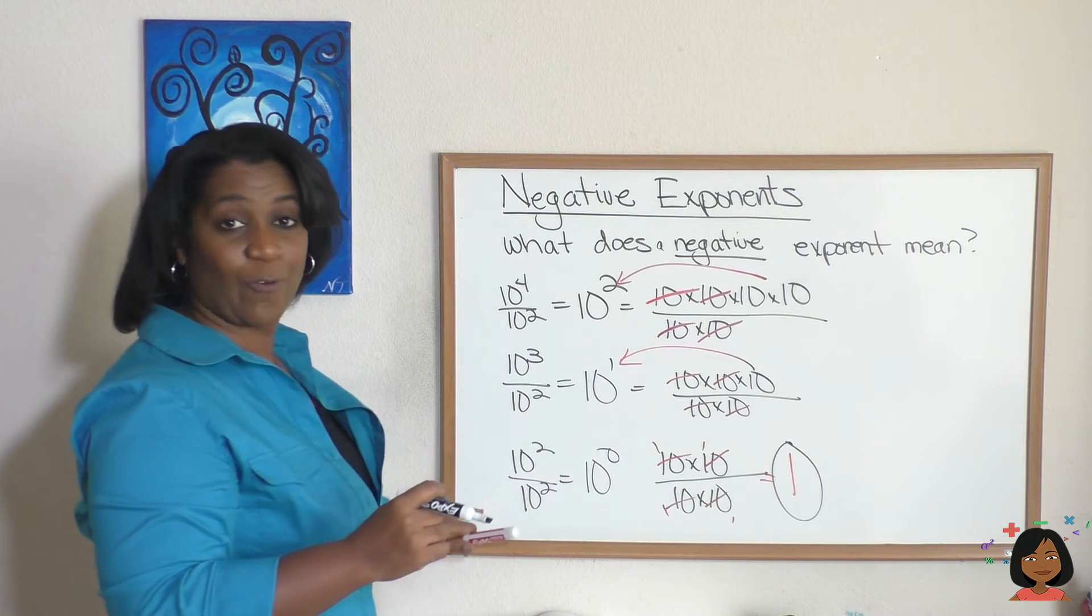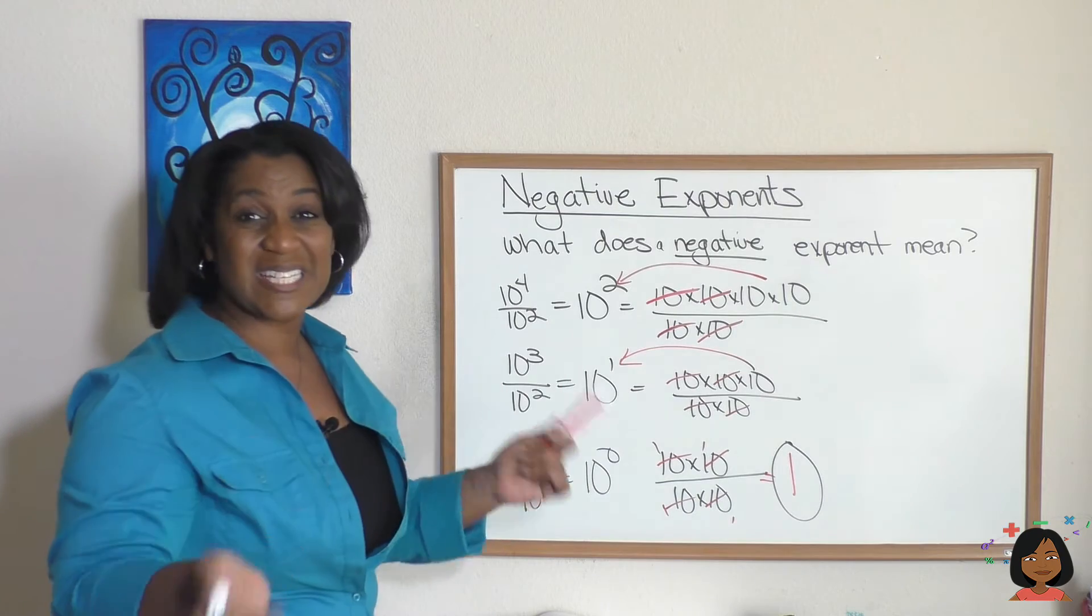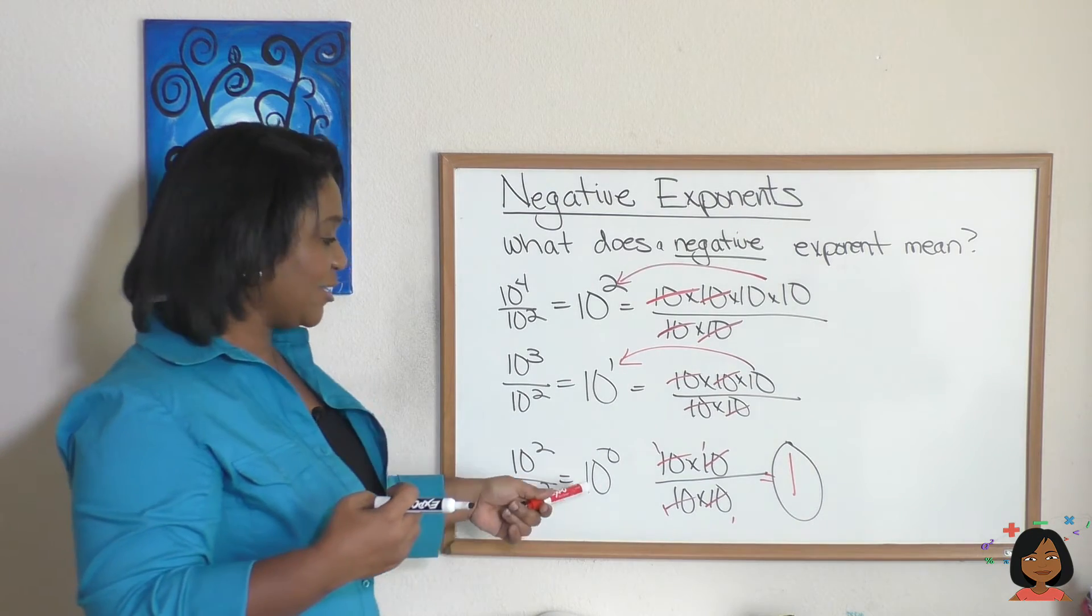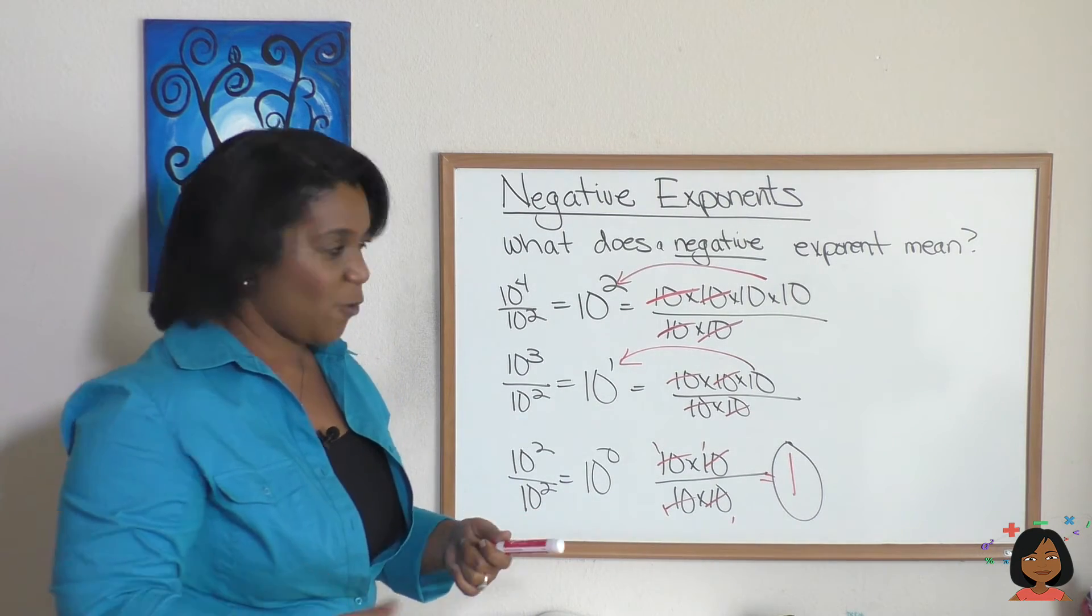If this was 5 squared over 5 squared, it would be 5 times 5 over 5 times 5, which would still equal 1. So anything to the 0 power essentially means there's no 0 at the end, it equals 1. Now let's keep moving forward.